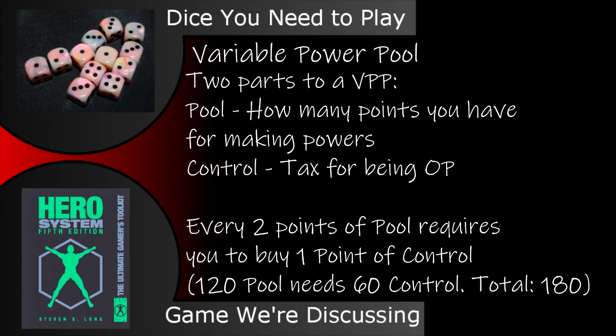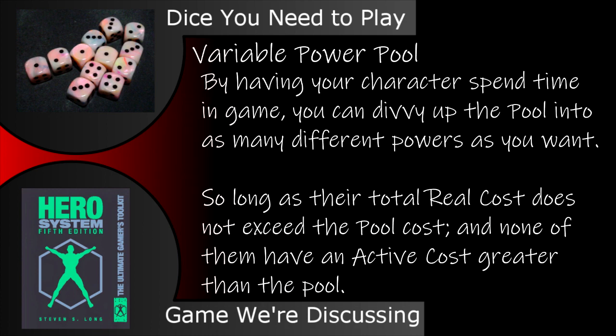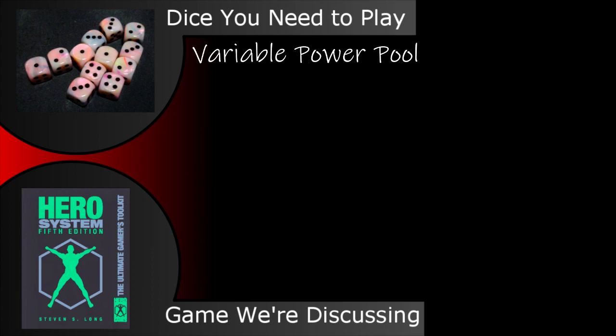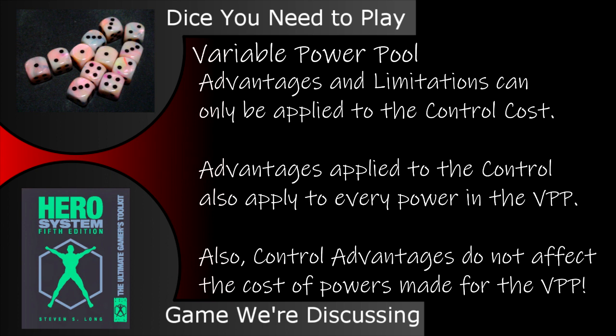Variable power pools consist of two parts: the pool and the control. They follow a ratio of 2 for 1 — for every 2 points of pool you buy, you need to spend 1 point on the control. So if you buy a pool at 120 points, you'll need a control that costs 60 points. But if you have a character spend time in-game to swap out their powers, you can divvy up that 120 points into any set of powers you need. No power in a variable power pool can have an active cost higher than its pool. You can have three 40 point powers or two 60 point powers, as long as the total real cost of all the powers you use does not exceed the pool cost. Advantages and limitations can only be applied to the control cost, never to the pool.